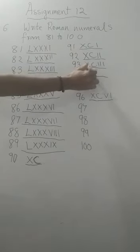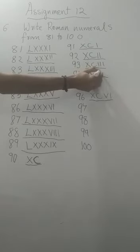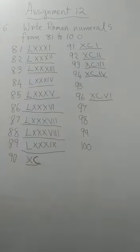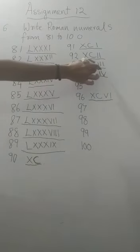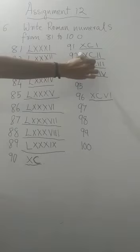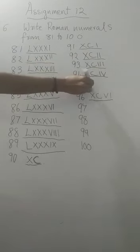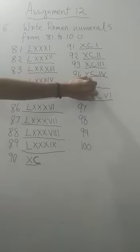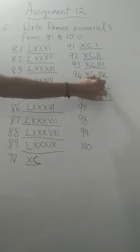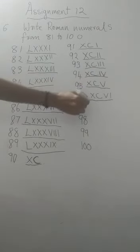90 and 4. How will you write? This is 4. 5 and in the left side you are writing. Left side of 5 you will write 1. That is 4. Next, 95.